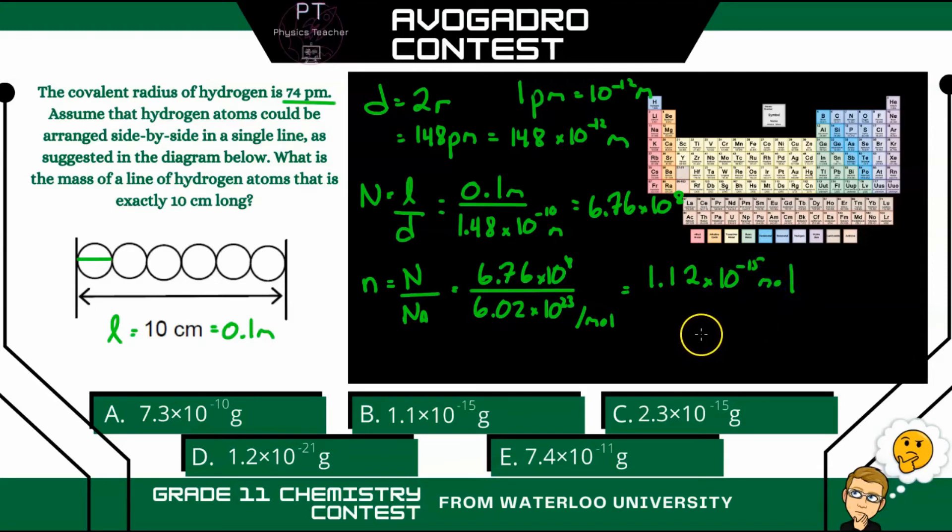So now to figure out the mass of all of these hydrogen atoms, the mass is going to be the number of moles N multiplied by the molar mass. And we can get that from our periodic table. So for H, the molar mass is 1.01 grams per mole.